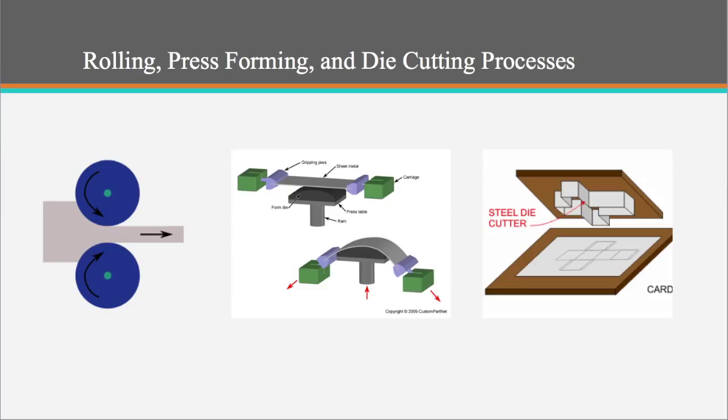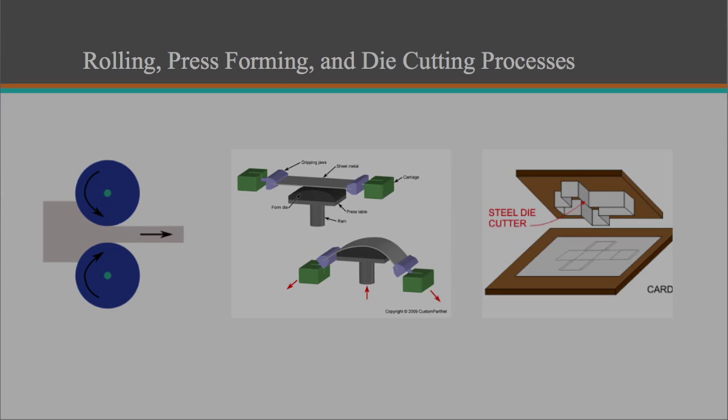The coiled sheet metal was then transferred to a manufacturing line where it was unrolled, press formed, and cut into the desired shape in a continuous die cutting process.